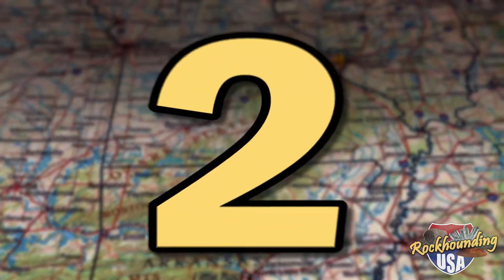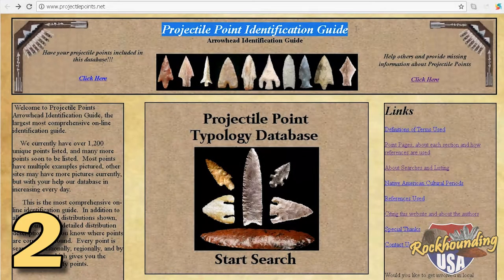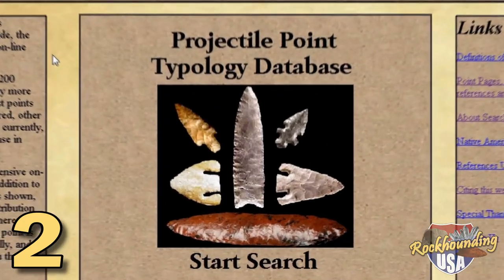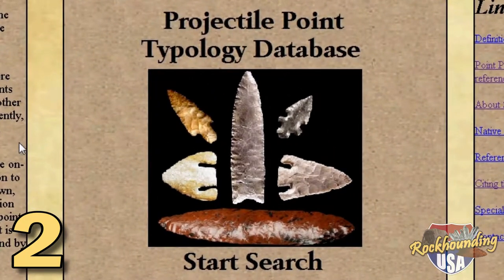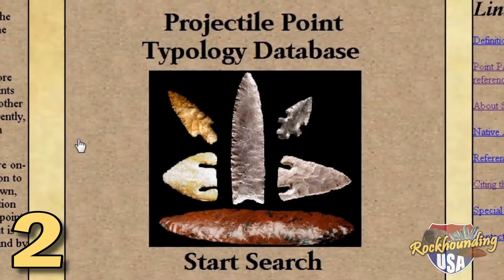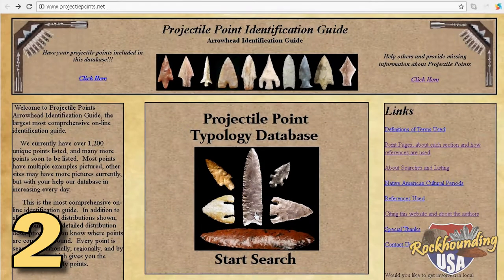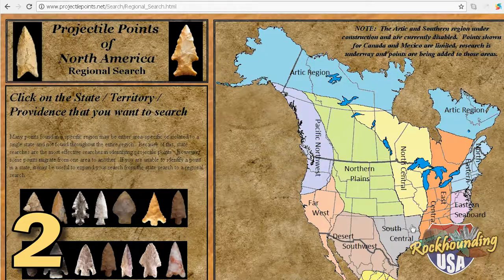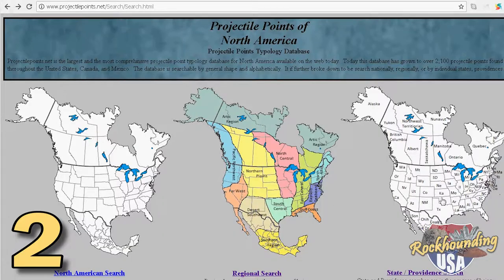Number two: Projectile Point Identification Guide. For those needing more than basic identification, this website is the mecca for all things artifact-related. Projectile Point Identification Guide has one of the largest online databases of Native American artifacts, with thousands and thousands of reference photographs. To help you identify your points, this site breaks the USA into basic regions, even down to the level of state-by-state.